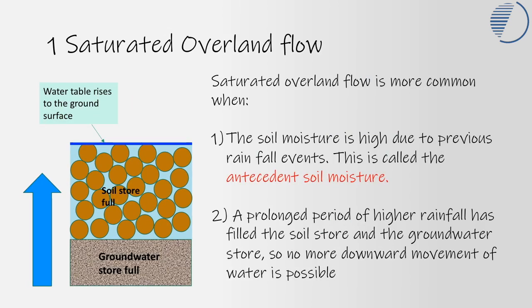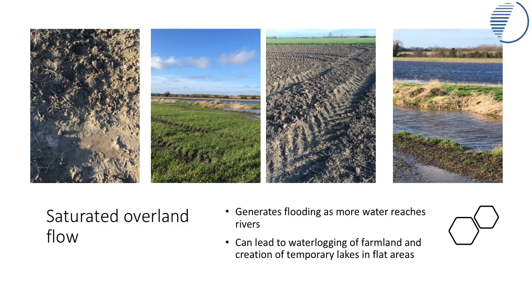Saturated overland flow is common where there's been a long period of heavy rain. In heavy rainfall the groundwater store will fill, and then above that the soil store will fill, so the water table is effectively at the ground surface. If the antecedent soil moisture — this is the soil moisture before it starts to rain — is high, then any more rain will simply not be able to move into those stores and so will become part of the surface water flows.